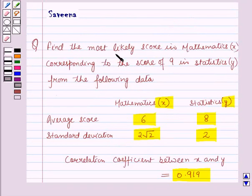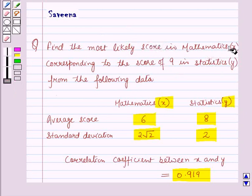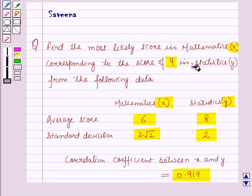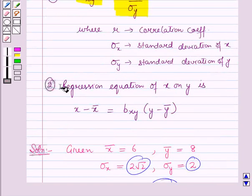We need to find the most likely score in mathematics corresponding to the score of 9 in statistics — that is, we need to estimate the value of x when y equals 9. The line of regression of x on y gives the best estimated value of x for a given value of y, so we will use the regression equation of x on y.